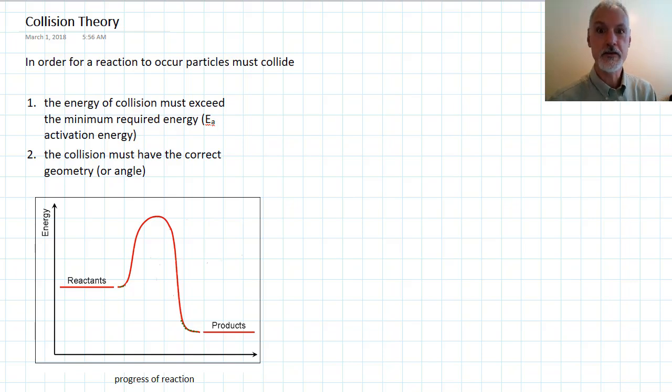Welcome to this program on collision theory. It's collision theory that we use to explain or understand how rates of reaction can be modified. In order for a reaction to occur, the first thing that must happen is the molecules must collide. Bimolecular or two-body collisions are by far the most frequent type of collision.